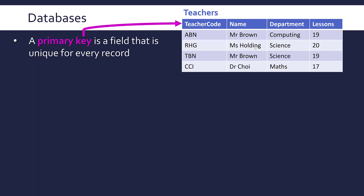We've got two Mr. Browns — the downside of having a common surname. Without the teacher code you wouldn't be able to distinguish between them: one is Science, one is Computing. Whereas if you have a teacher code, it narrows it down to just one record. This is important when we start to search or change a database. It can be a number, a code, often an ID — you need one in every table.